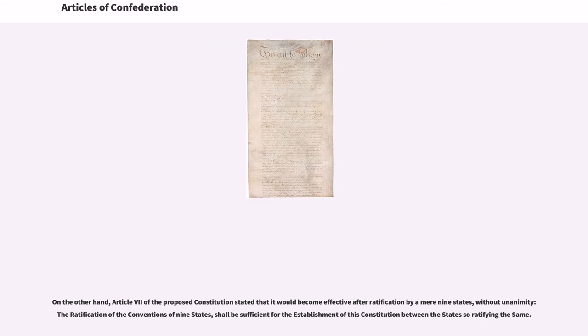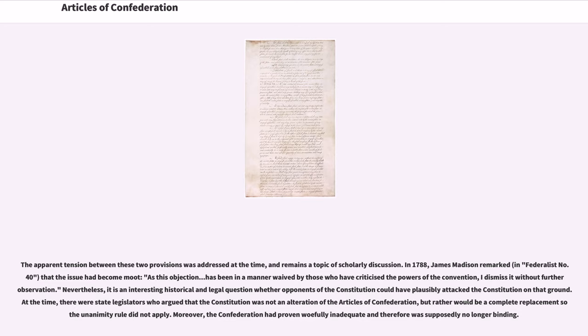On the other hand, Article 7 of the proposed Constitution stated that it would become effective after ratification by a mere nine states: 'The ratification of the conventions of nine states shall be sufficient for the establishment of this Constitution between the states so ratifying the same.' The apparent tension between these two provisions was addressed at the time and remains a topic of scholarly discussion. In 1788, James Madison remarked in Federalist No. 40 that the issue had become moot, as 'this objection has been in a manner waived by those who have criticized the powers of the Convention; I dismiss it without further observation.'